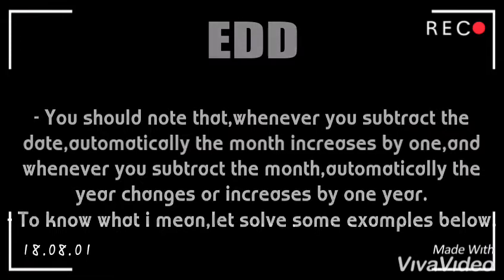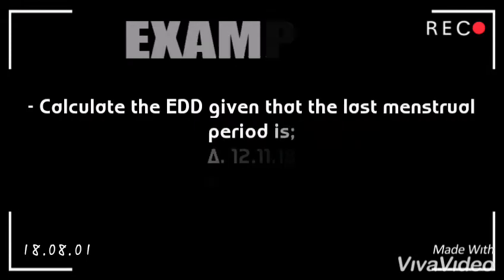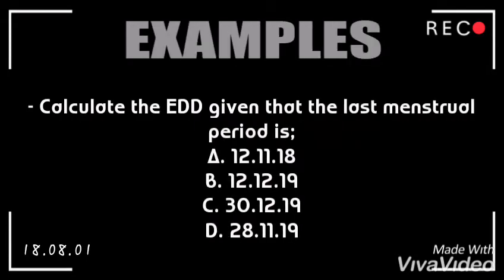Let's solve some examples. Calculate the expected date of delivery given that the last menstrual period is: A) 12/11/18, B) 12/12/19, C) 30/12/19, D) 28/11/19.